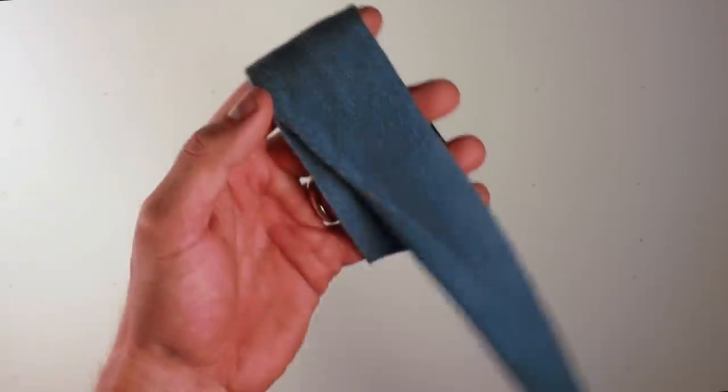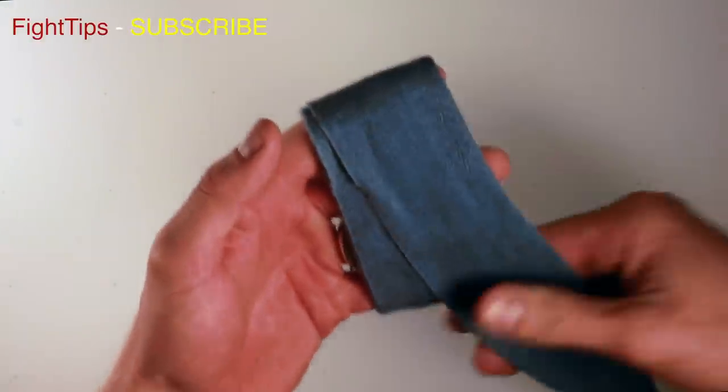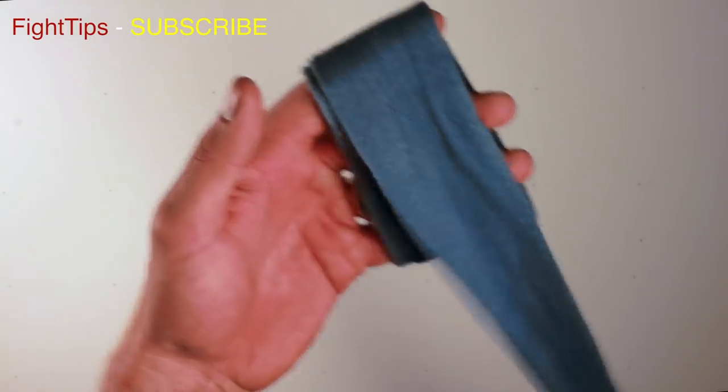So here we go. First step is to find the side that's down. Once we do that, we can wrap it around our fingers about six times. I'm going to go around six times here.